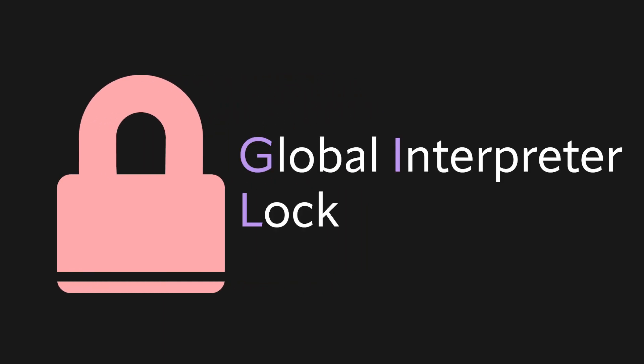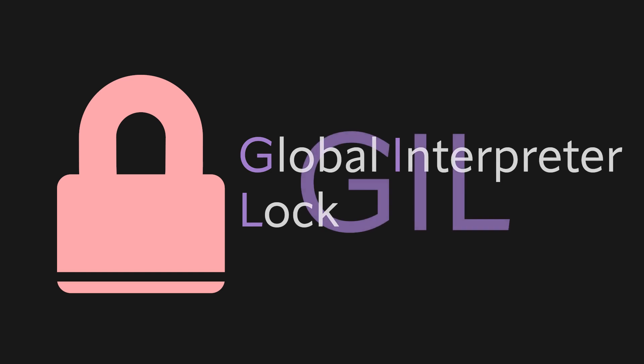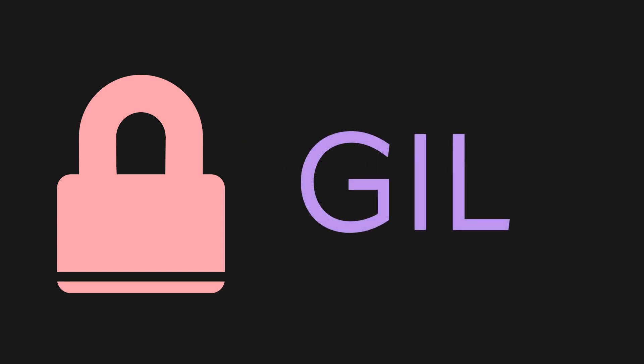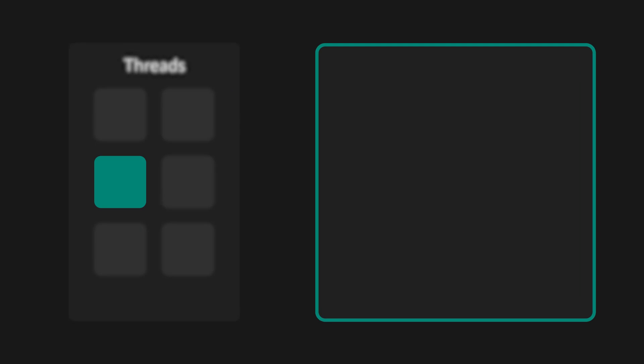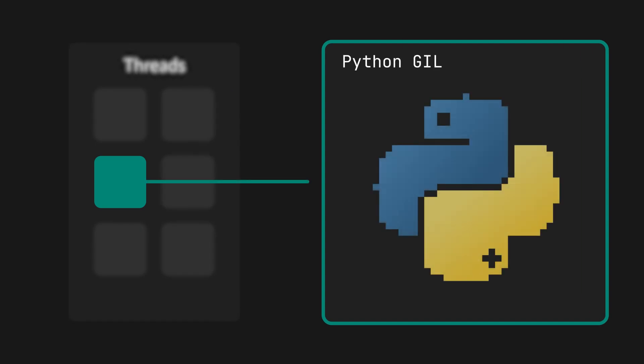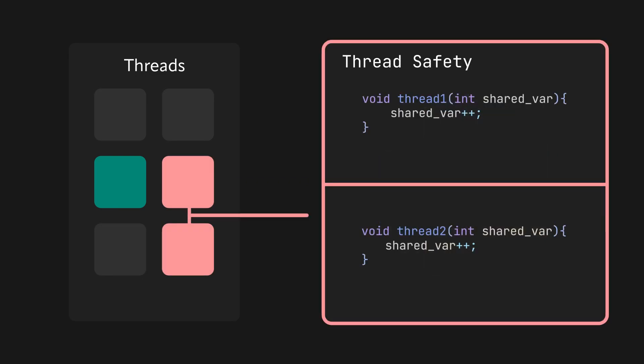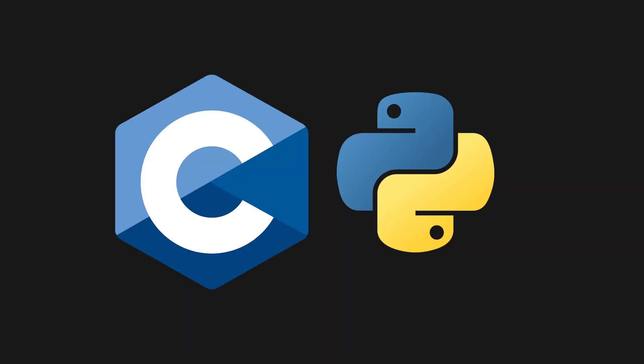The global interpreter lock, love it or hate it, is a part of Python and is not going anywhere anytime soon. A global interpreter lock, or GIL, is a mutex lock over the entire Python interpreter, and basically all that means is it allows a single thread to control the data within Python. Although it's about as bad as it sounds, the GIL does have many positive benefits. The GIL is necessary as CPython's memory management isn't thread safe.